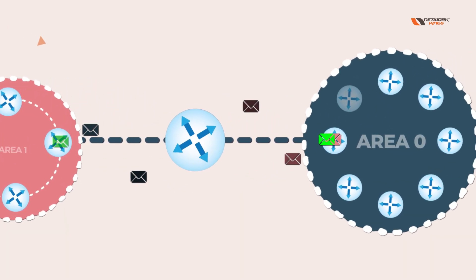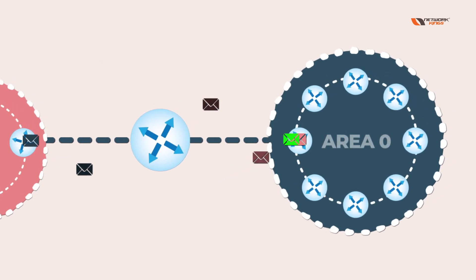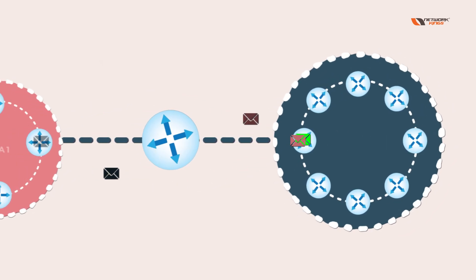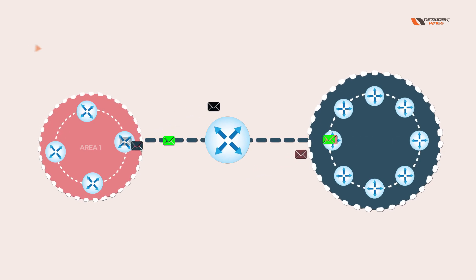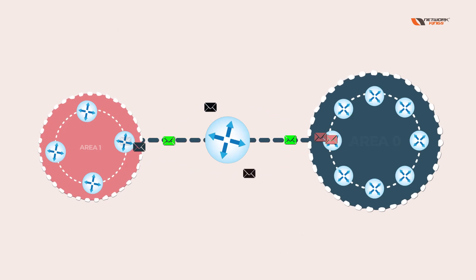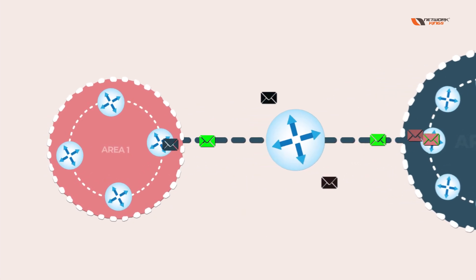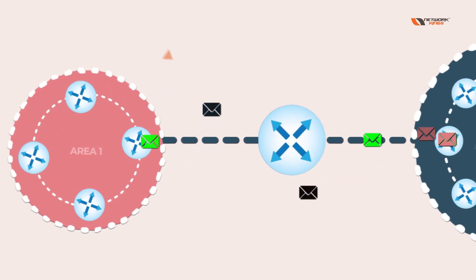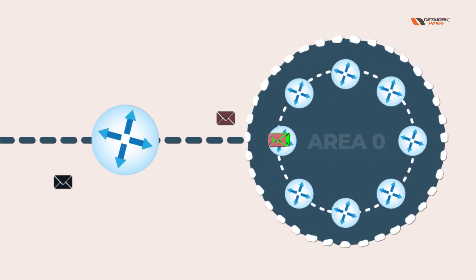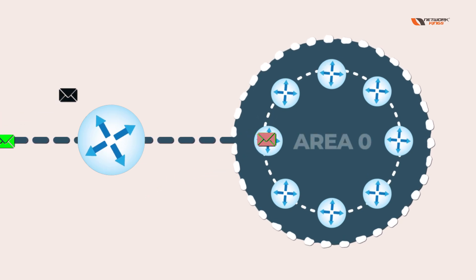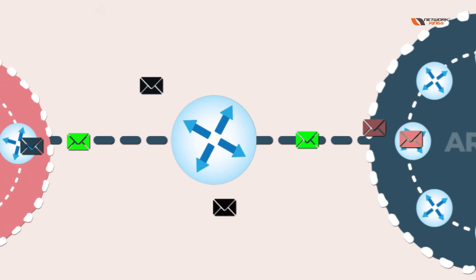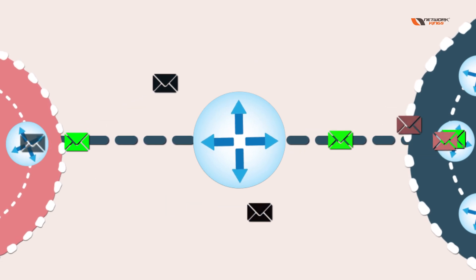If you do not have an ABR, you can't send Area 1 routes to different area routers. So if you want to send routes from Area 1 to Area 0 or any different area, you can only send routes if you have an ABR.